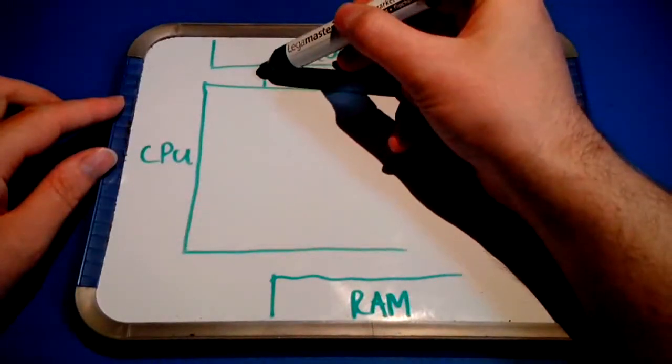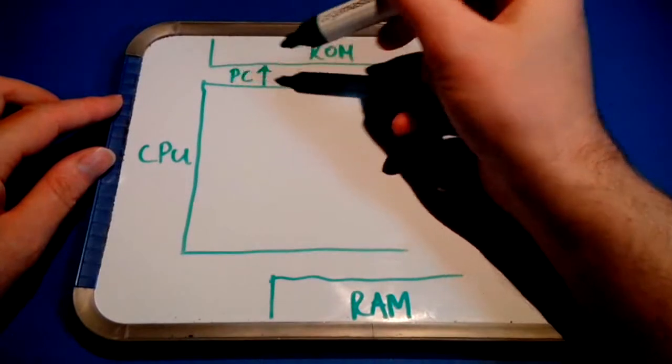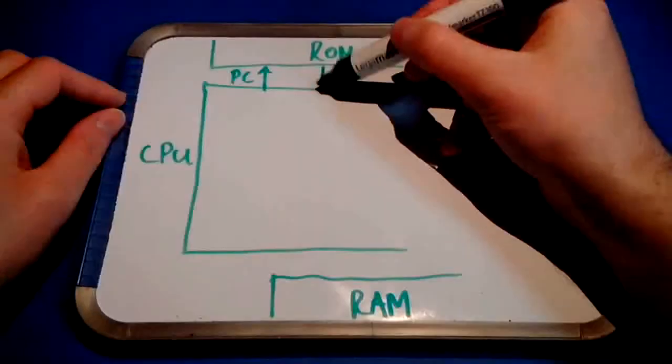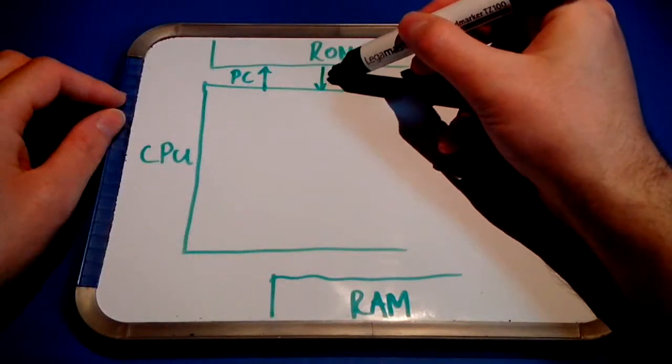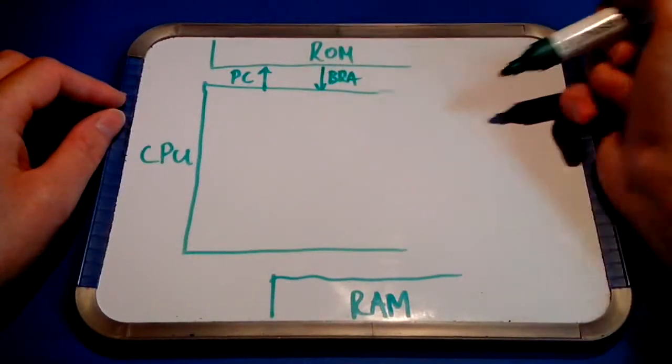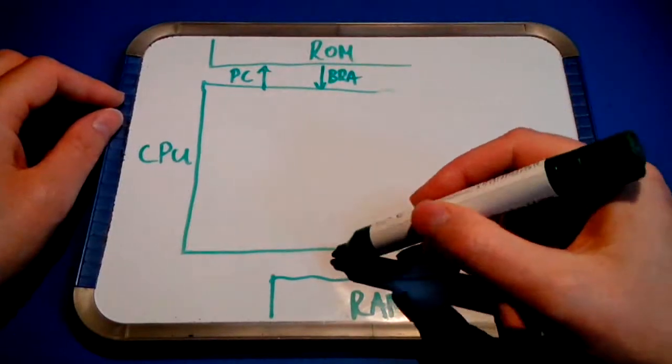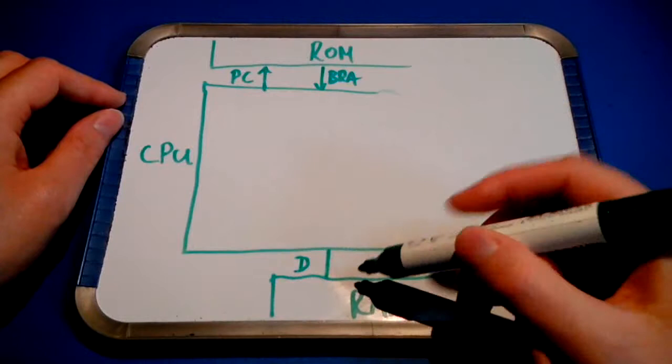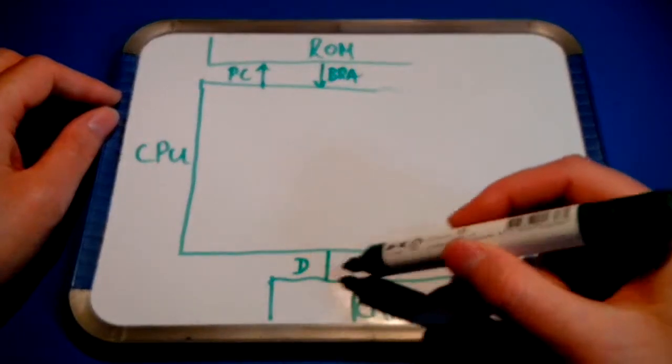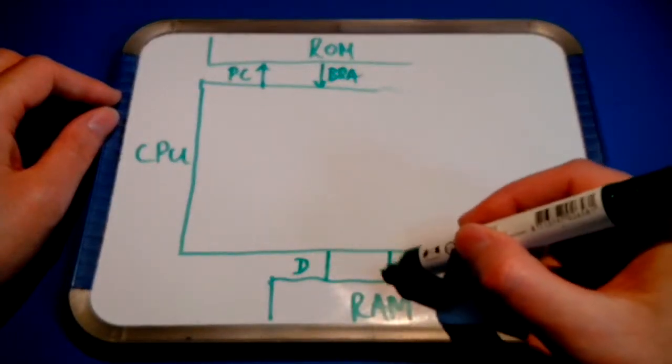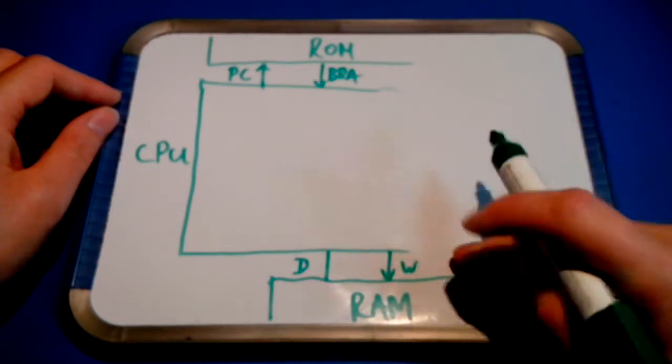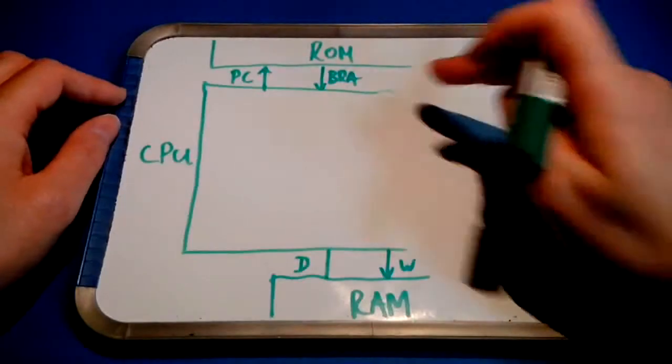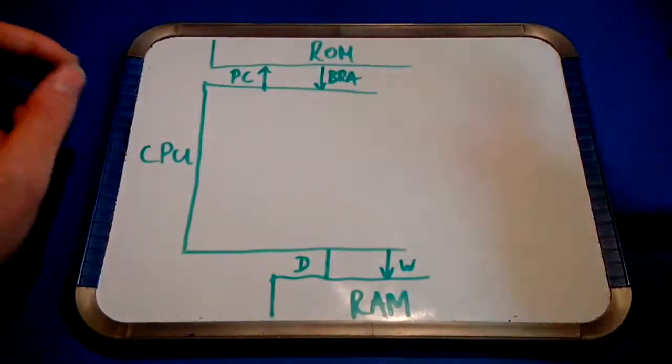The CPU is connected to the ROM using its program counter output. And the ROM is connected back to the CPU using the branch address input. What all that means is discussed in another video. Between the CPU and the RAM there's a 1-bit data line and also a 1-bit write line to let the RAM know whether the CPU wants to read from or write to the RAM.